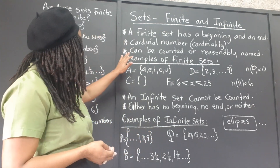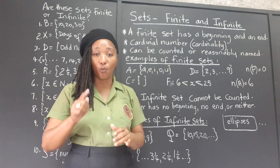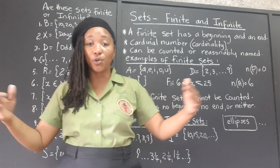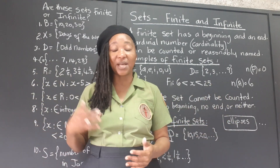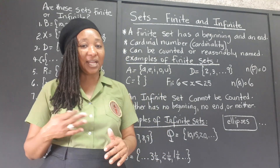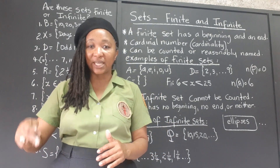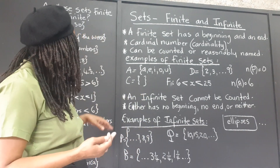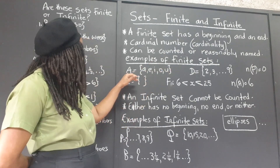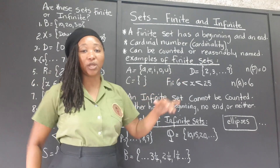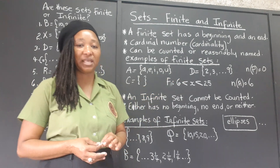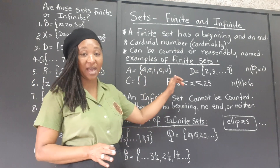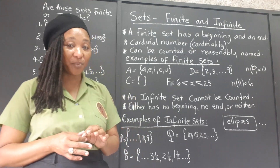The elements of a finite set can be counted: one, two, three, four. Even if it's a fairly large number of things, it can reasonably be counted — it would just take a little longer. It is possible to count or name all the elements. For example, Set A has {A, E, I, O, U}. We know these are the vowels of the English alphabet — five vowels — so the cardinality is five. It is very much a finite set.